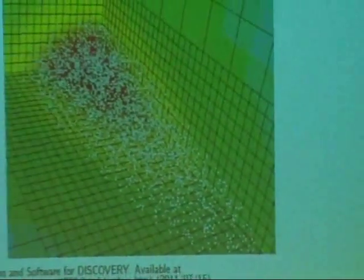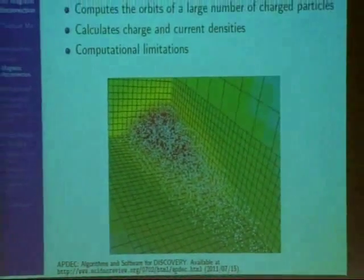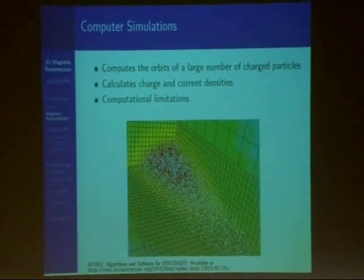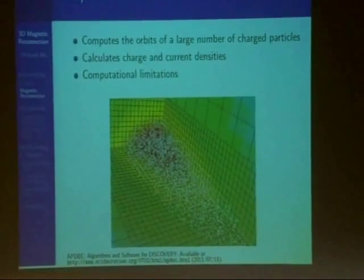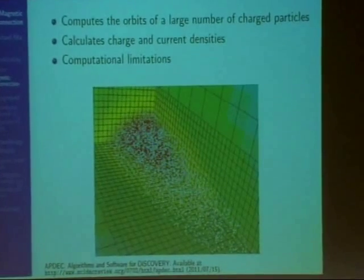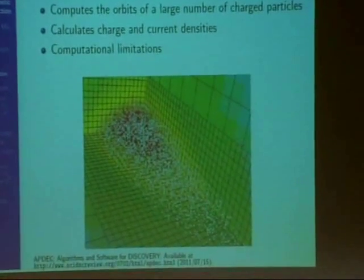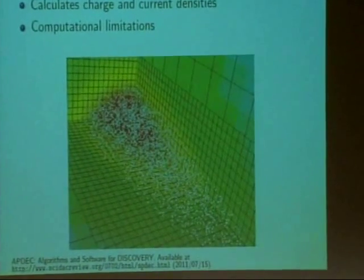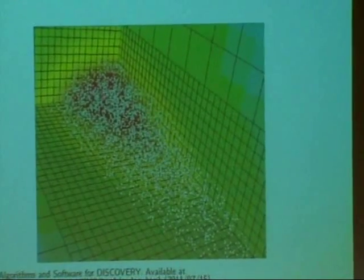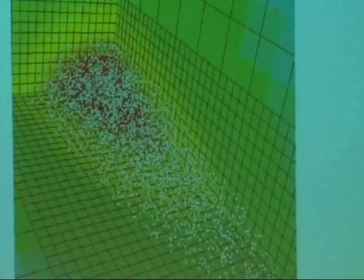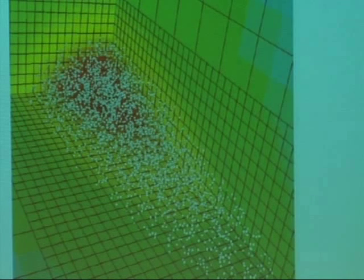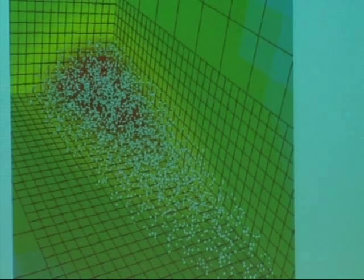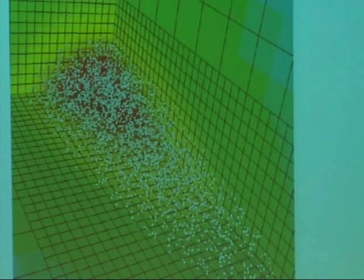Computer simulations are often used to analyze plasmas, and out of all the many types, the particle and cell, or PIC for short, simulation has shown to be particularly successful. What it does is that it computes the orbits of a large number of charged particles, and then from that, it can calculate the charge and current densities. Although it does not approximate any basic physics, the computational limitations do necessitate that some of the physical parameters be compromised. For example, the proton-to-electron mass ratio is often reduced from 1,836 to around 200, and this can actually reduce the computation time for some computers from five years to about a week.